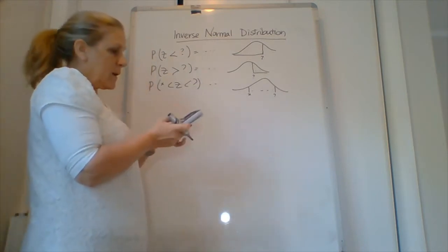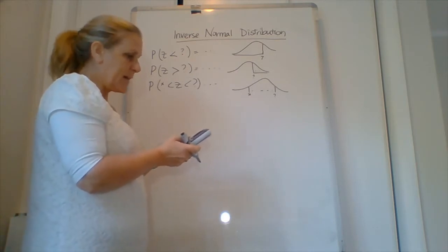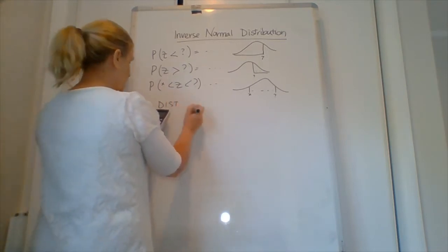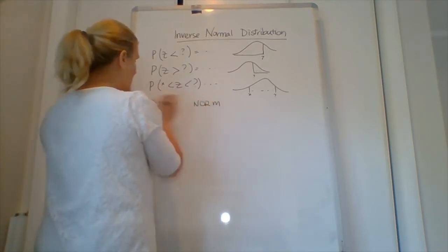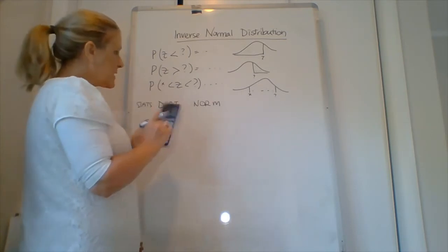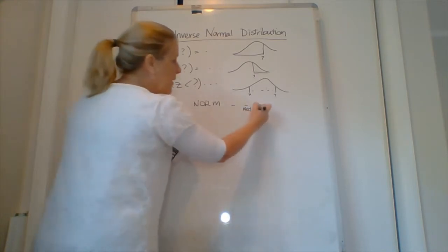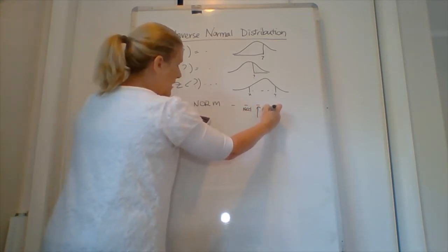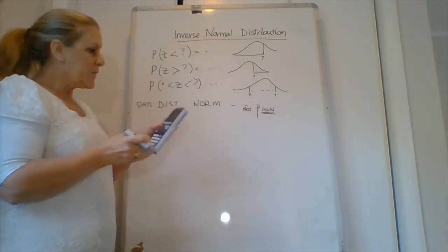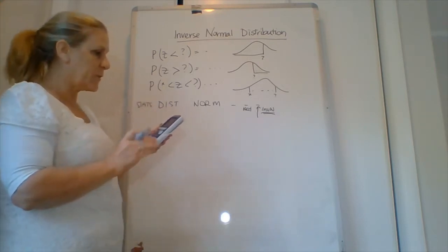On your calculator where you found the normal distribution, if you go into that same place you'll find distributions. So distribution, normal. Again it's in stats mode. Push the buttons one at a time. Then when you get to the next one there are three. One, two, three. We've been using the n, c, d button. Now we're going to use this one which says i, n, v, n.